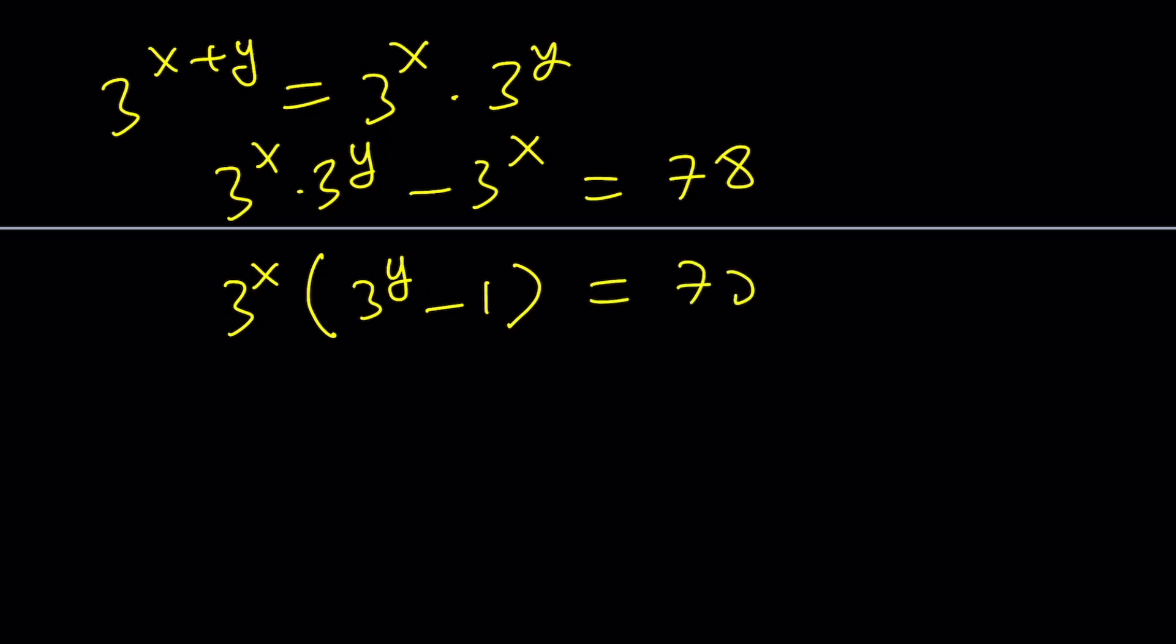Now, number theory deals with Diophantine equations and they use algebra tools most of the time, especially the divisibility criteria. Divisibility basically means that this product needs to be equal to 78, so each factor or at least one of the factors must divide 78. If you look at factors of 78, you're going to have an idea, but here's what I want to do.